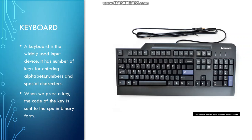Let me tell you the various parts of a keyboard. A keyboard consists of numeric keys like 1, 2, 3, 4 and so on. It has alphabets like A, B, C, D. It also has special function keys like F1, F2, F3 and so on. And when we press a key on a keyboard, the code of the key is sent to the CPU in binary form.